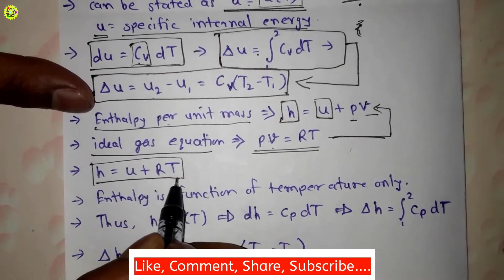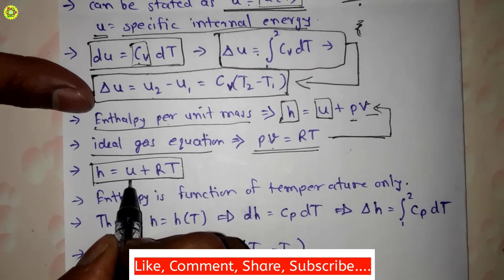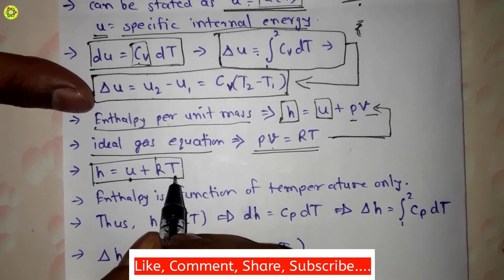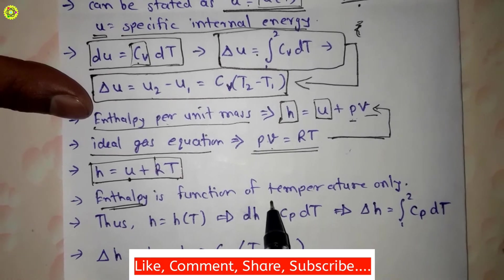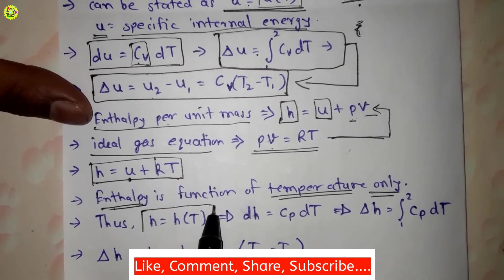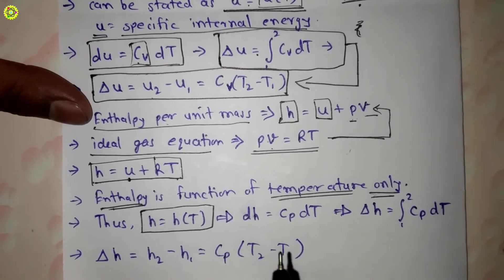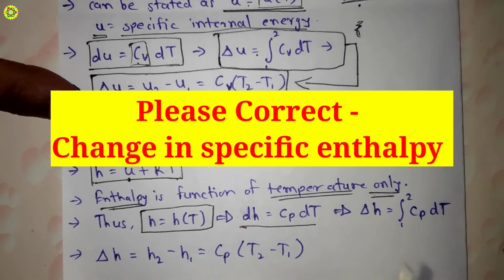In this equation, the right-hand side has u, which is a function of temperature as seen earlier, and the term RT is also a function of temperature only. Therefore, enthalpy h is also a function of temperature only — h = h(T). After differentiating this equation we get dh = cp·dT.